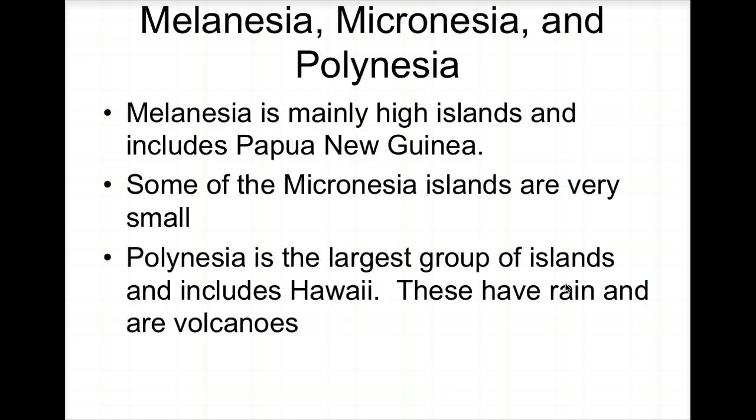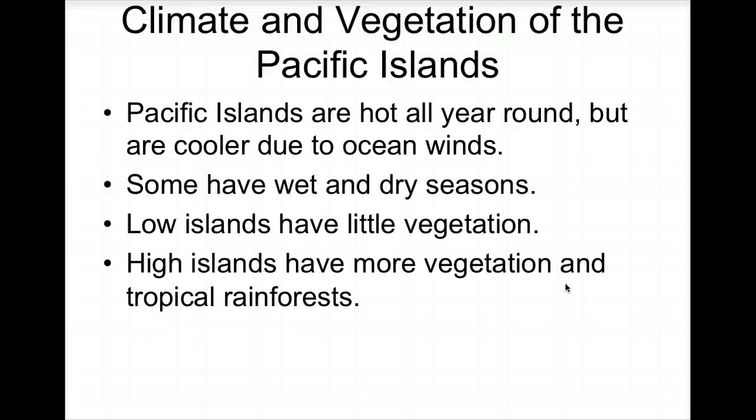Melanesia is mainly high islands and includes Papua New Guinea, which shares the second biggest island in the world with Irian Jaya. Micronesian islands are very small. Polynesia is a large group of islands that includes Hawaii, and these islands are primarily volcanic in origin.